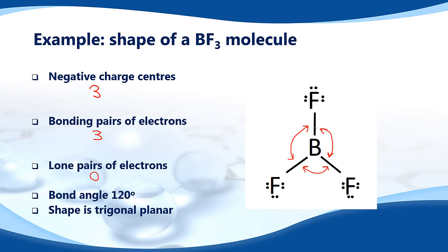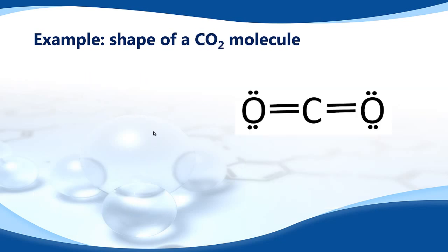You might notice that this boron atom only has six electrons in its outer shell — it doesn't follow the octet rule. Boron is a good example of an atom that doesn't need eight electrons in the outer shell; here, boron only has six electrons in the outer shell and is stable.